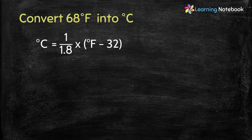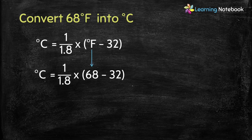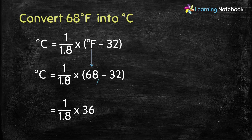So let's put the value of temperature in Fahrenheit into this formula, and we get Celsius equals 1 upon 1.8 into 68 minus 32. 68 minus 32 equals 36, so we get 1 upon 1.8 into 36.